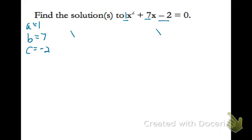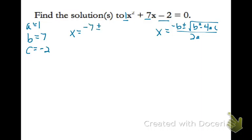I'm going to write the quadratic formula over here: the opposite of b, plus or minus the square root of b squared minus 4ac, all divided by 2a. Now we'll plug in our values. We'll take the opposite of 7, or negative 7, plus or minus the square root of 7 squared minus 4 times 1 times negative 2, all divided by 2 times 1.